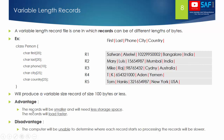Variable length records have advantages: records are smaller compared to fixed length, they need less storage space, and since they are smaller they load faster. However, the disadvantage is that we are unable to determine where each record starts, so the access process takes longer. In fixed length we could calculate the exact position of any record, but with variable length records we only know the first record starts at position zero — locating subsequent records requires sequential scanning.